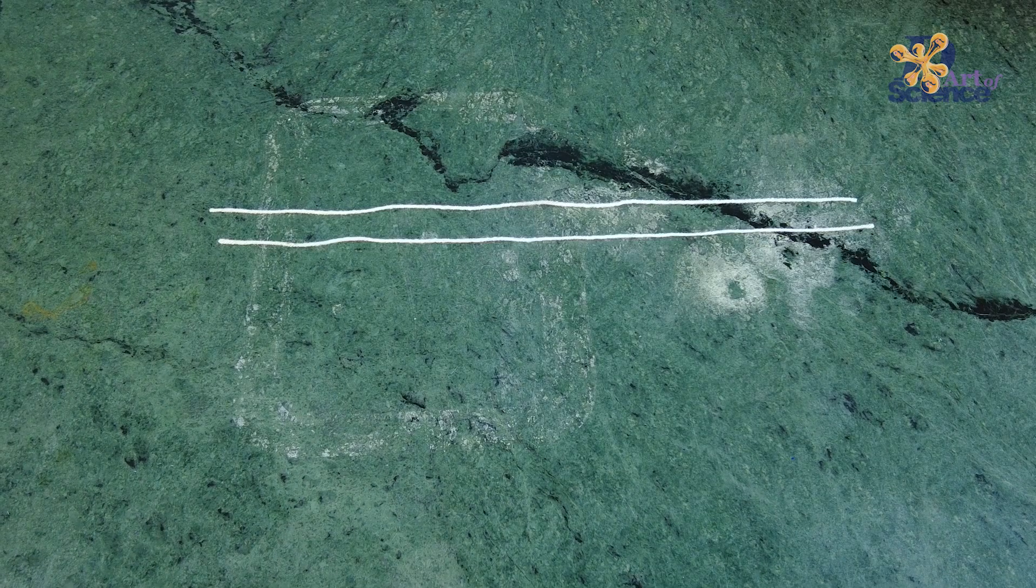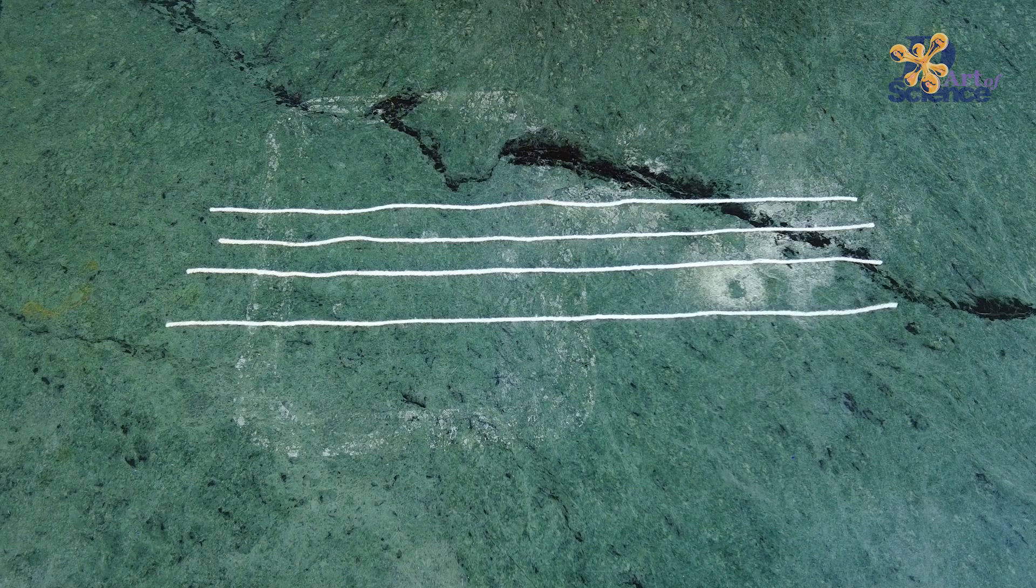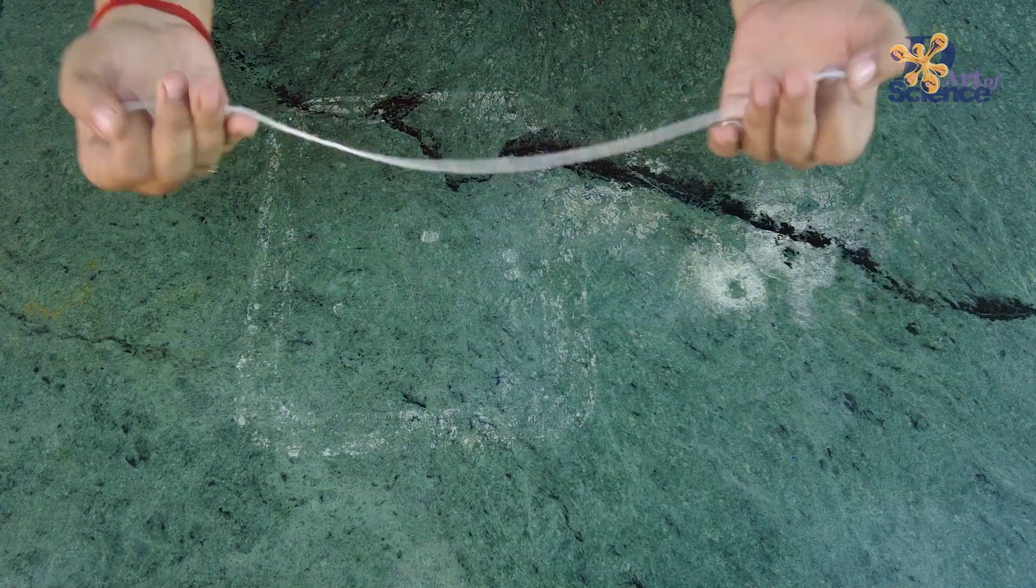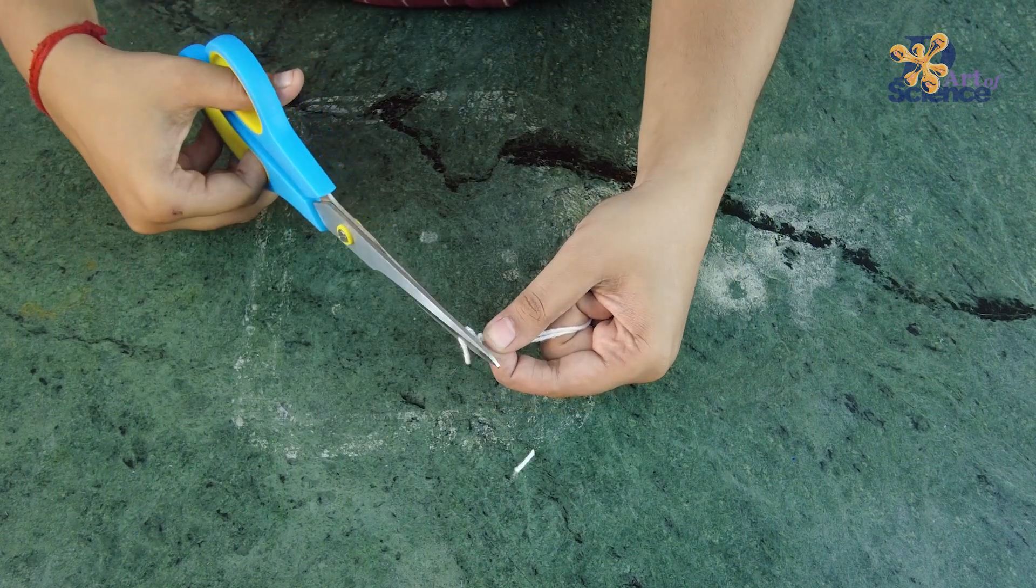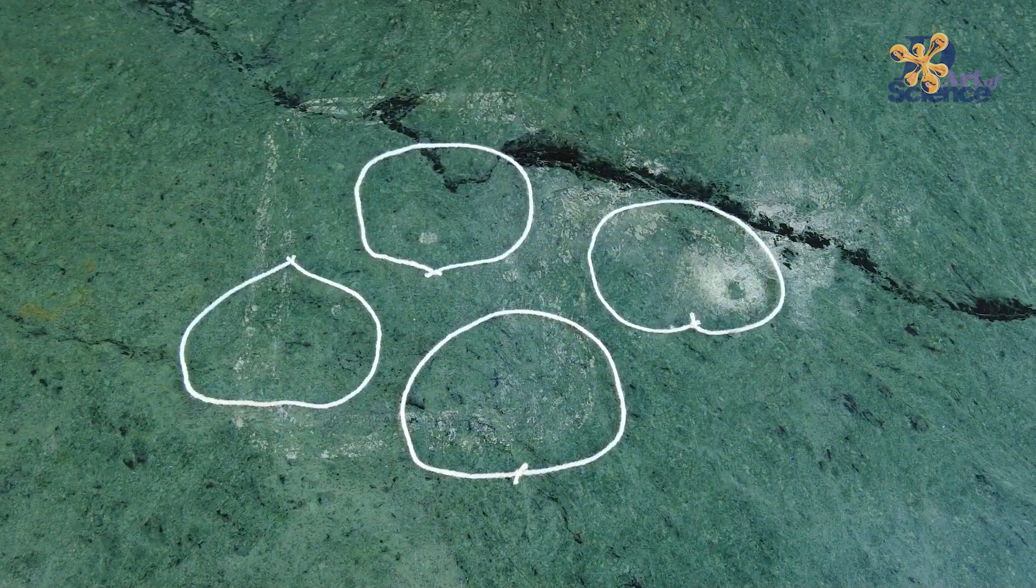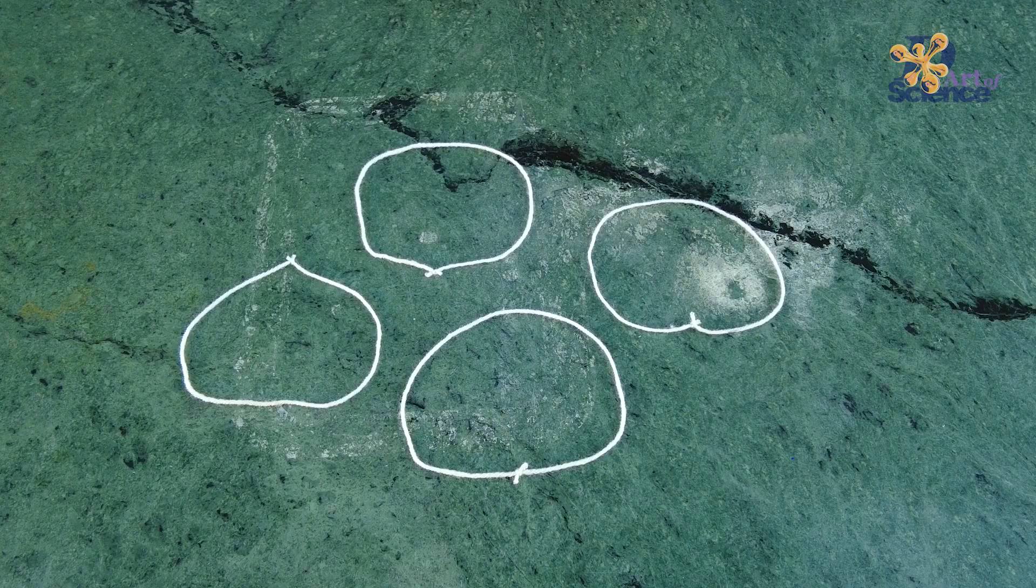Take four pieces of thread, measuring 40cm each. Tie the two ends of the thread. Cut off the excess thread. And repeat the same for all pieces of thread.